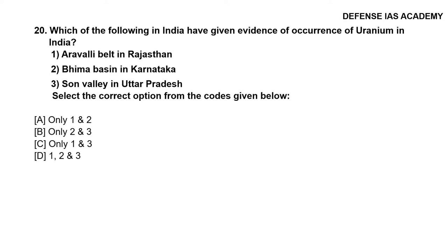Question 20: Which of the following in India have given evidence of the occurrence of uranium? 1. Aravalli belt in Rajasthan, 2. Bhima Basin in Karnataka, 3. Sunar Valley in Uttar Pradesh. The correct answer is option D, 1, 2 and 3 — all three regions have given evidence of uranium occurrence.